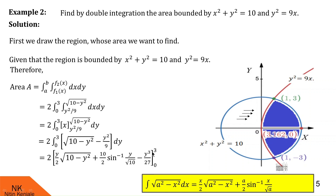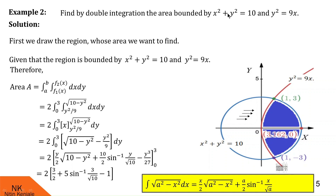Evaluating over the limits 0 to 3: substituting the upper limit y = 3 gives (3/2)√(10 − 9) = 3/2, plus 5 sin⁻¹(3/√10), minus 27/27 = 1. Substituting the lower limit y = 0 gives all three terms equal to 0. So the final area bounded by the curves x² + y² = 10 and y² = 9x is 2 × (3/2 + 5 sin⁻¹(3/√10) − 1).